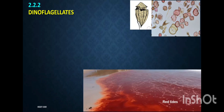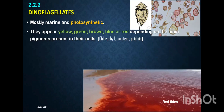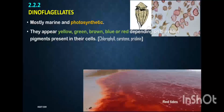Next are dinoflagellates, also plant-like protists. They are mostly marine, living in oceans and seas, and are photosynthetic. They possess pigments like chlorophyll, carotene, and xanthins in various forms and compositions, which gives them a range of colours — they may be yellow, green, brown, blue, or red depending on pigment composition.